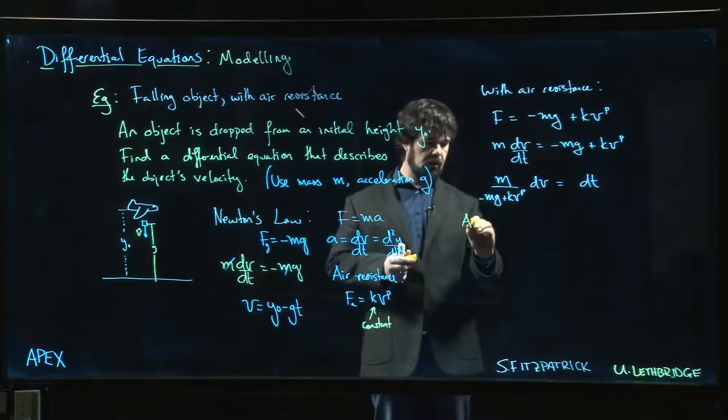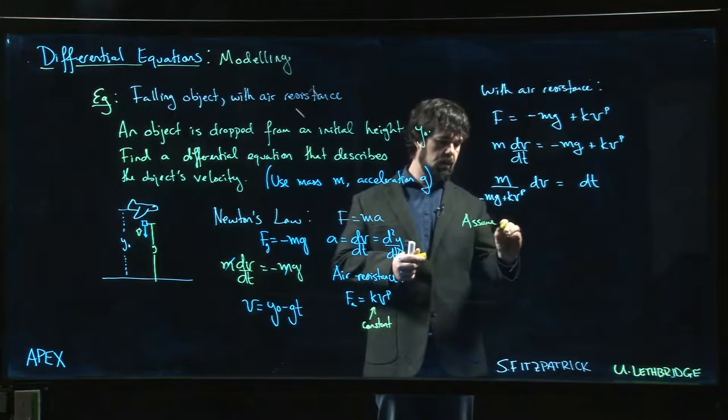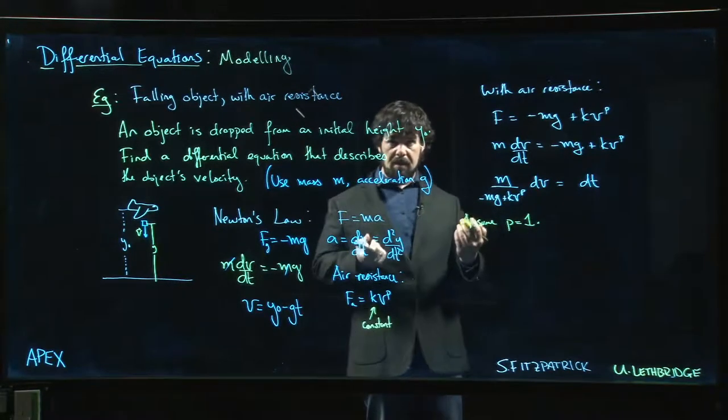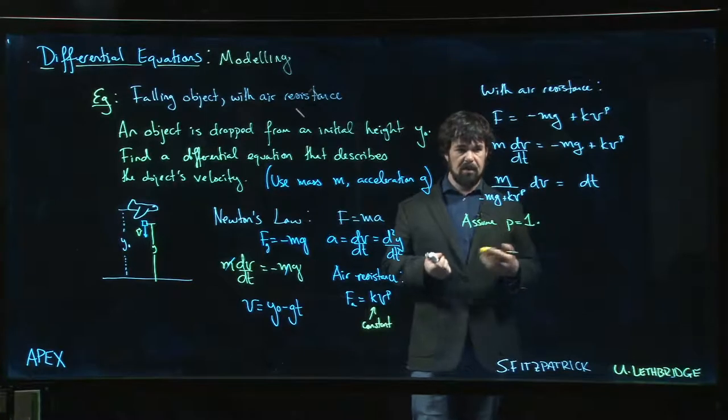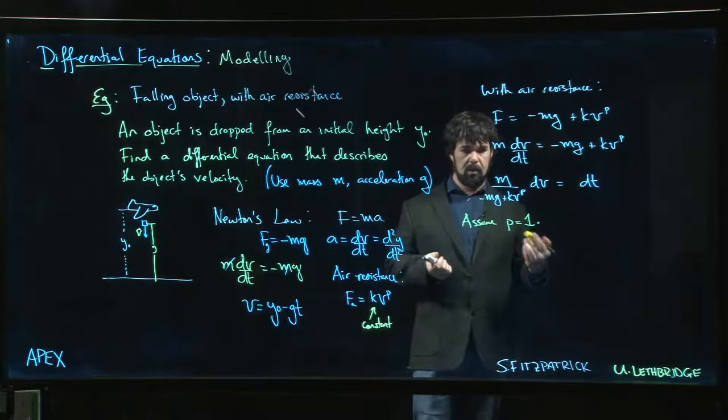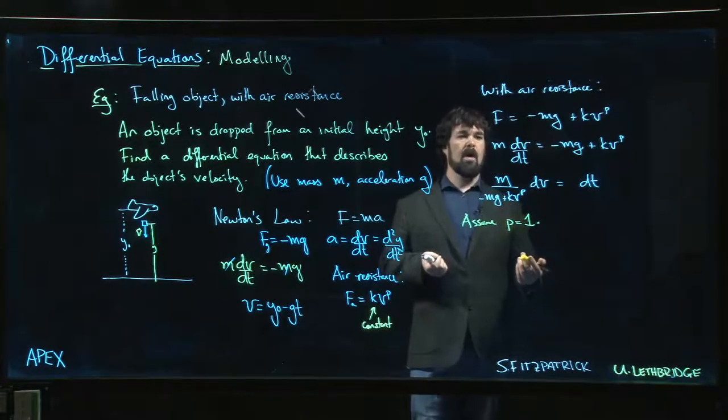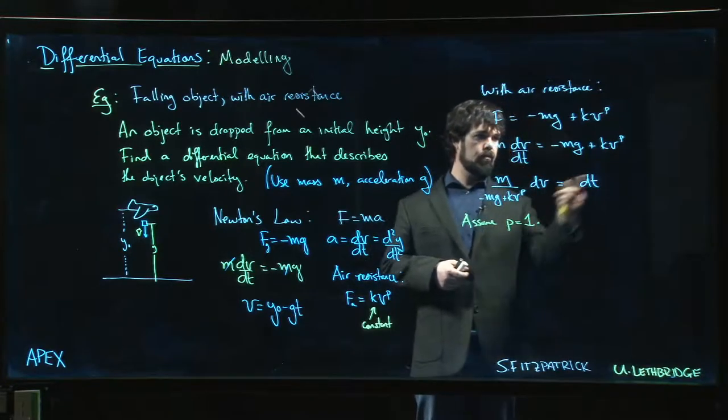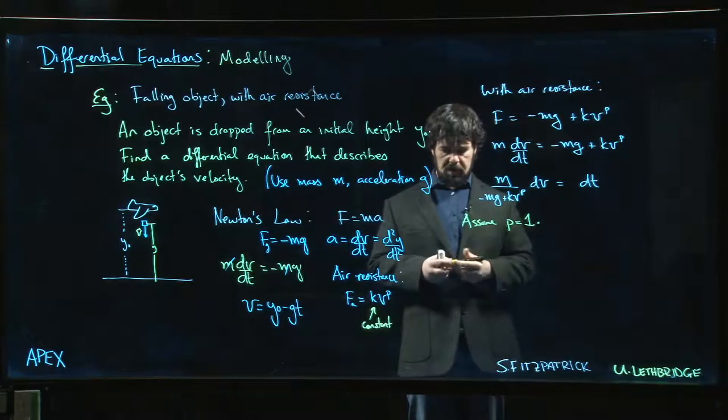What we do instead is say, why don't we for now assume that p equals one? Maybe this is not the best model. Maybe when we compare with experiment we find this doesn't quite work the way we want. But why do we assume p equals v? Because if we assume p equals v, we get a linear equation.